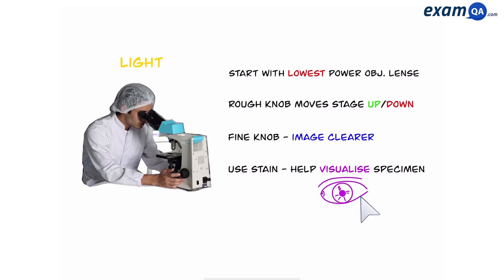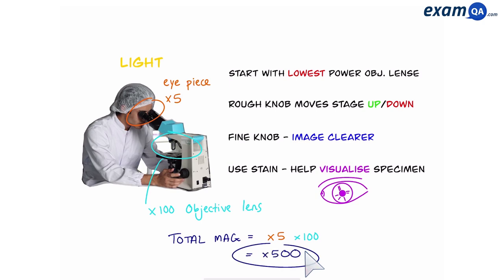A final point on magnification: let's say the eyepiece lens has a 5x magnification and the objective lens is 100x. That means your total magnification is going to be the product of both values. So in this case, it will be 500x.